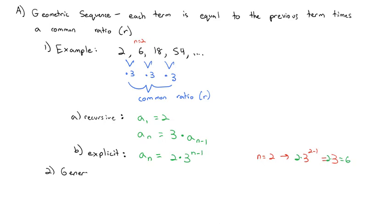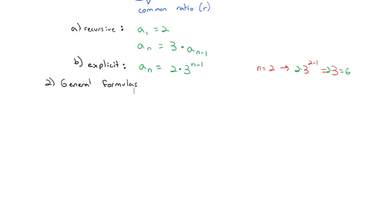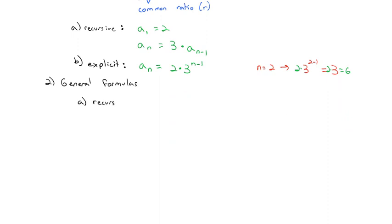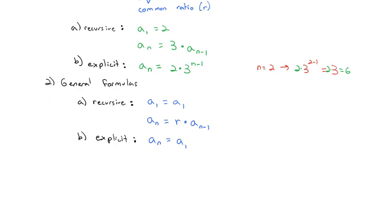We can generalize this much like we generalized with the arithmetic series. The general recursive formula says the first term is equal to a sub 1, and the nth term is equal to the common ratio times the previous term. The more useful explicit formula says a sub n is equal to the first term times the common ratio to the n minus 1 power. These formulas will guide everything we see in the geometric series.